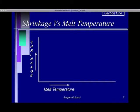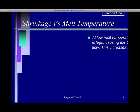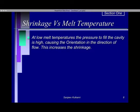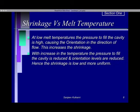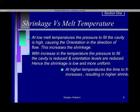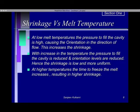For shrinkage versus melt temperature, shrinkage is on the y-axis and melt temperature on the x-axis. At lower melt temperature the pressure to fill the cavity is high, hence orientation in the direction of flow occurs in the part — this increases shrinkage. As you increase the melt temperature, the pressure to fill the cavity is reduced and orientation levels are reduced drastically, hence shrinkage is low and more uniform, and part quality is much better. However, at higher melt temperature the time to freeze the melt increases, which results in higher shrinkage.